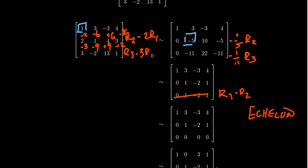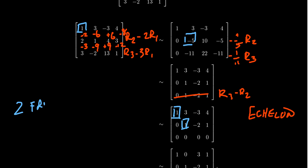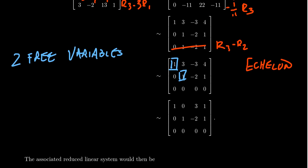We can identify all the pivots: there are pivot columns in the first and second columns, while columns three and four have no pivots — these are free variables. We have two free variables in this system. To finish, we put the matrix into row-reduced echelon form by taking row one minus three times row two, giving us values zero, three, and one in that row. This gives us our RREF, with pivots confirmed in the first and second columns.